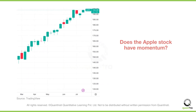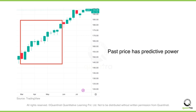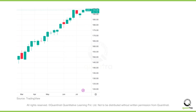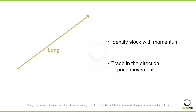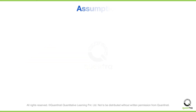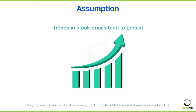So, would you say that the Apple stock has momentum? The answer is yes. Momentum trading suggests that past price behavior generally has some predictive power. The behavior that you see in the past can be used to predict future price movements. You can use momentum by identifying stocks with strong momentum and taking a trade in the direction of the price movement. The primary assumption of momentum trading is that trends in stock prices tend to persist for a certain period of time.